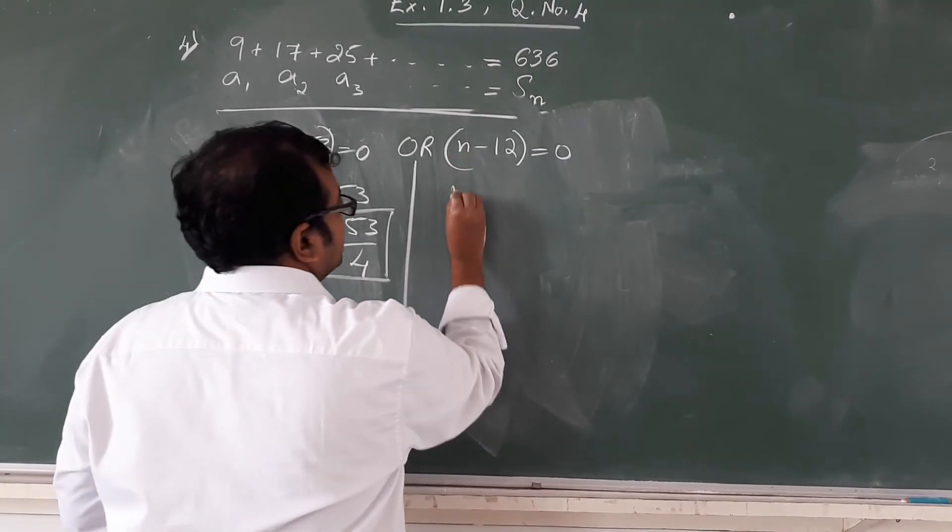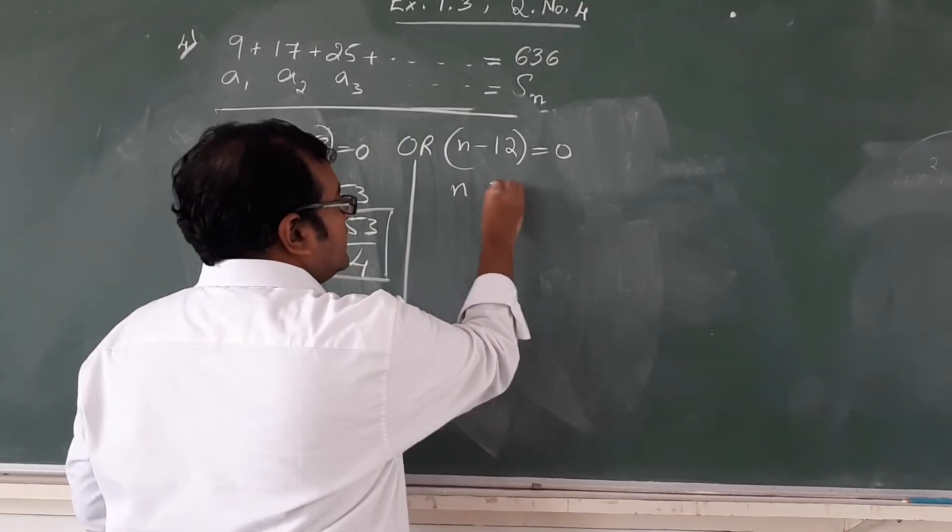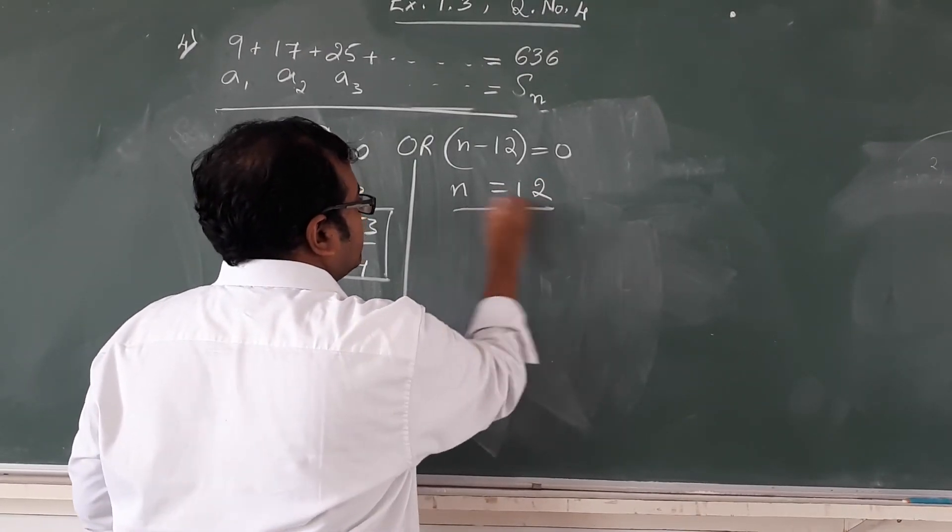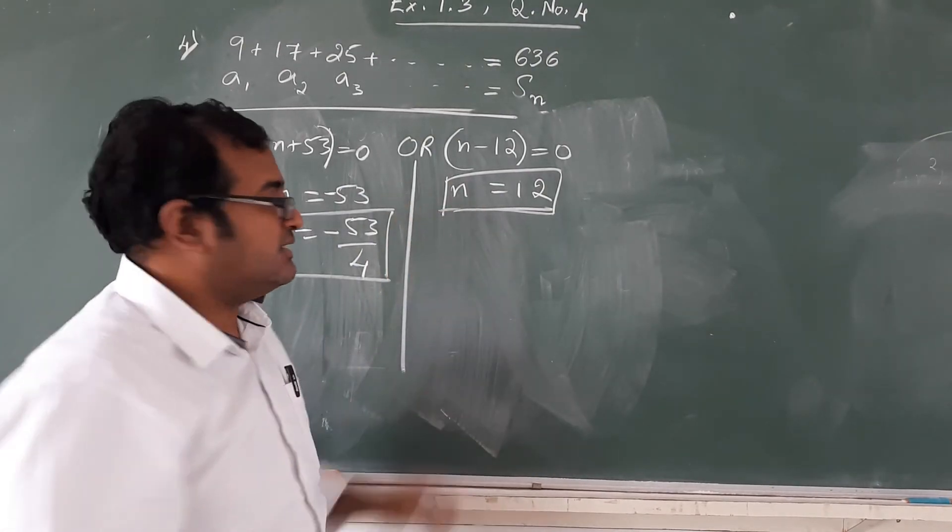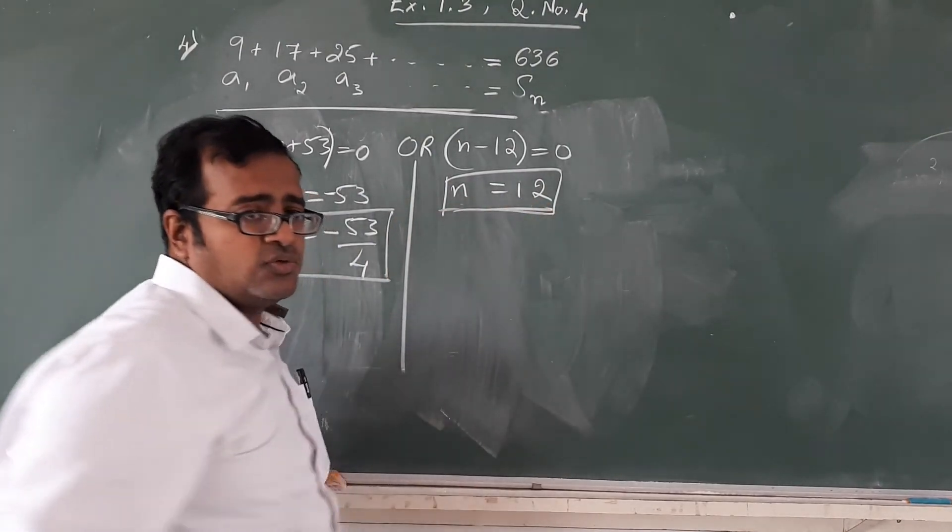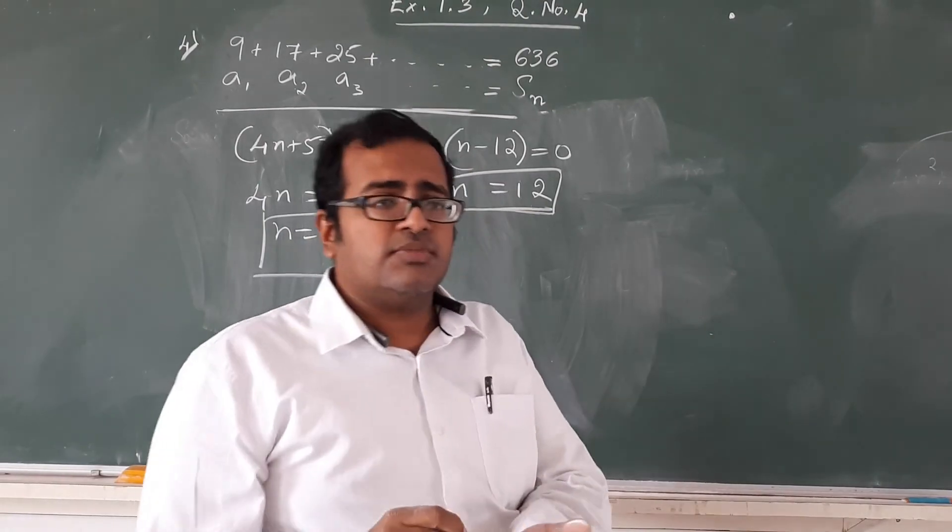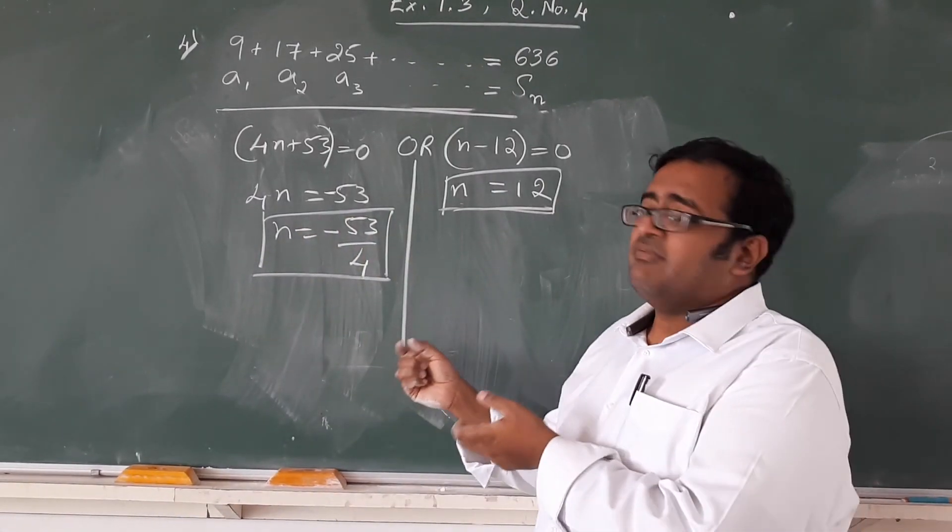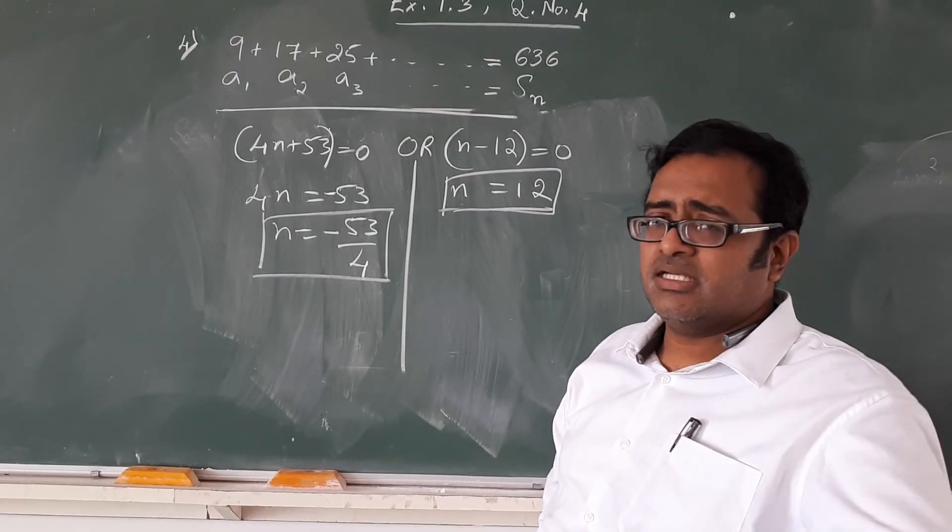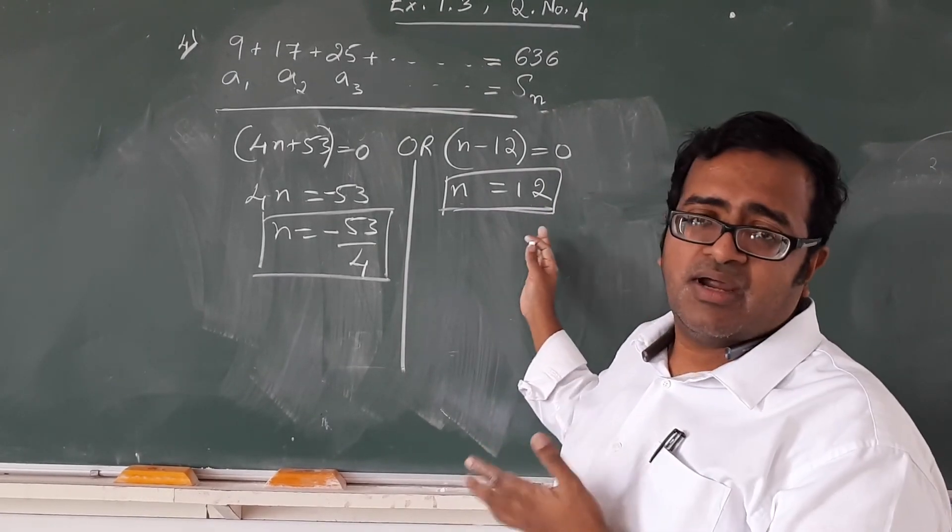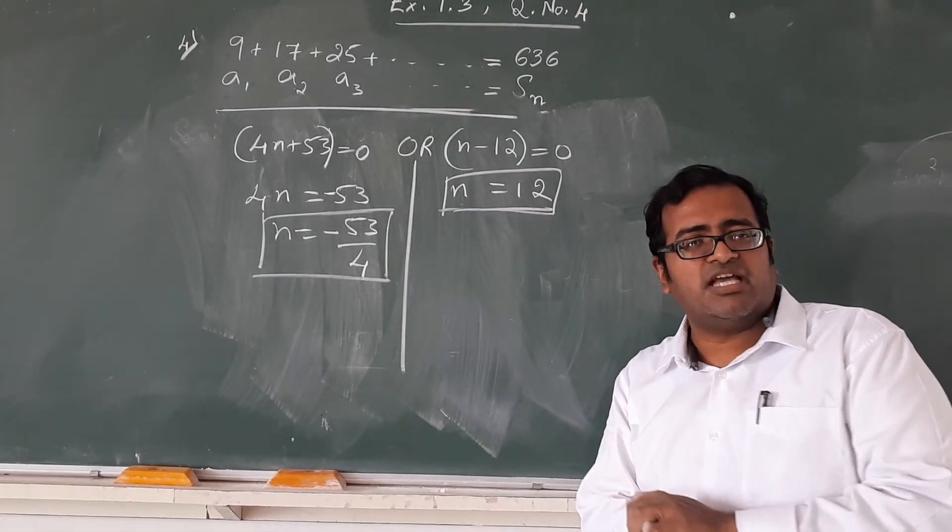Let us stress on the other side. n minus 12 which is 0, then n equals 12, which is a natural number. So the only possible answer is n equals 12. So we can say safely that 12 terms, the first 12 terms when added will give the answer of 636. They have asked how many terms, so the number of terms required is equal to 12. Thank you.